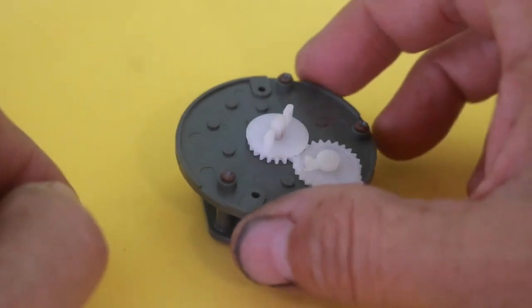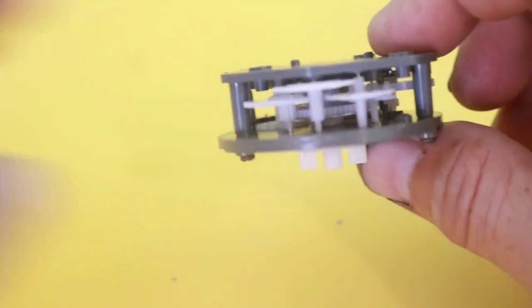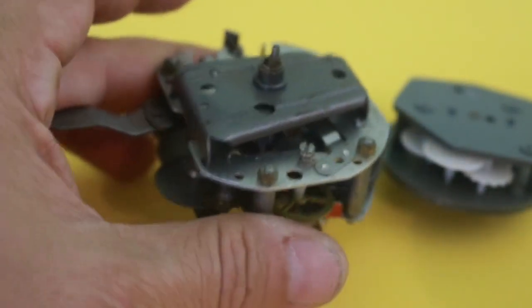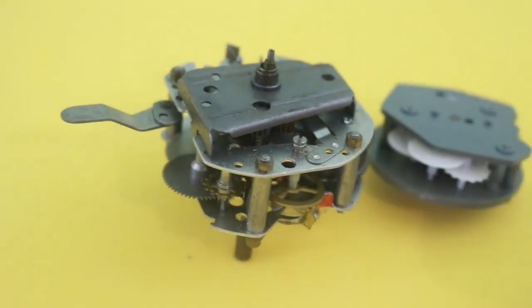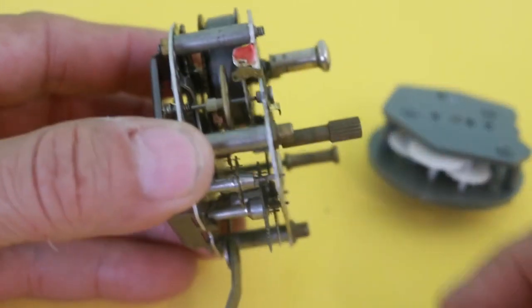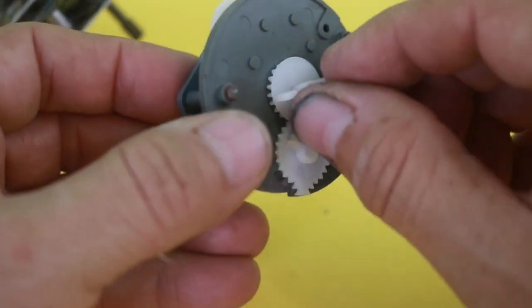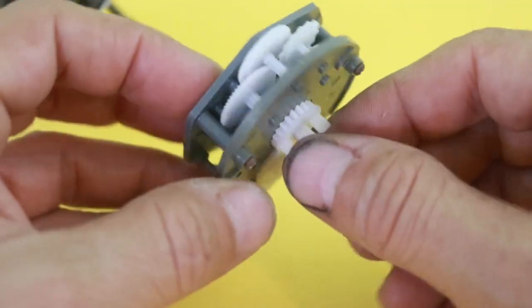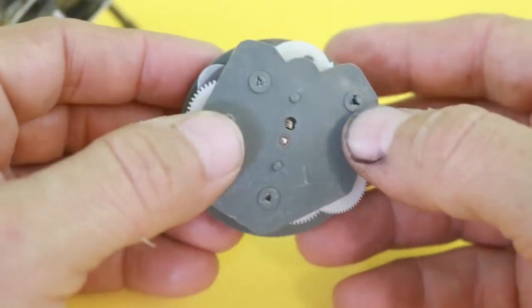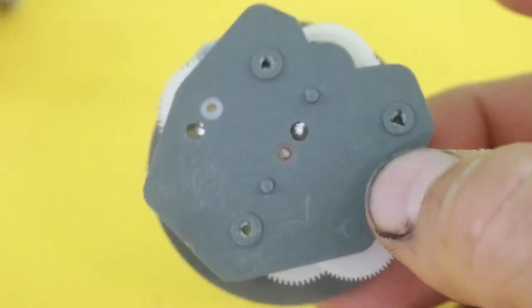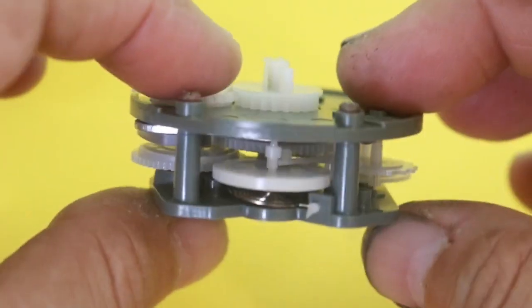Okay, so the mechanism is practically identical to that of a clock. Here you can see the mechanism of a real clock. It is the same principle we have here. When you wind up the mechanism, what you do is that you wind a spring that is here at the center of the mechanism.